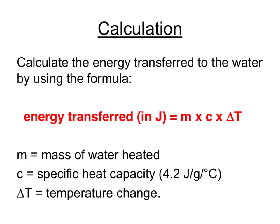In order to calculate the energy transferred to the water, you'd use this formula: energy transferred in joules equals the mass times specific heat capacity times the temperature change of the water. This is on the exam paper in the physics formulae section. The mass of the water would be in grams. The specific heat capacity is in joules per gram per degree Celsius, where it takes 4.2 joules to heat up one gram of water by one degree Celsius. The temperature change is the difference in temperature from beginning to end.